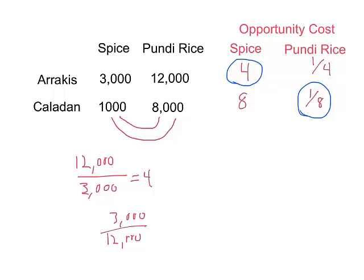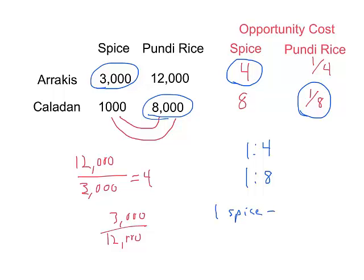Now the question becomes: what ratio should they trade at when they specialize? We know Arrakis should only produce spice — that's where they have a comparative advantage. And Caladan should only produce pundi rice — that's where they have a comparative advantage. Then they should trade between each other. For Arrakis, the ratio of spice to pundi rice they can make is 1 to 4. For Caladan, the ratio of spice to pundi rice is 1 to 8 in terms of their productive capacity. So every bushel of spice should trade for somewhere between 4 and 8 bushels of rice — somewhere between there — and then they're both better off.